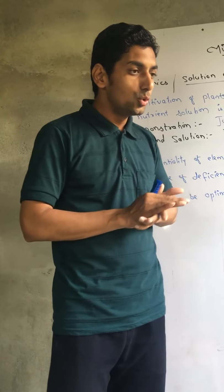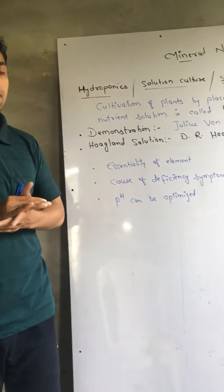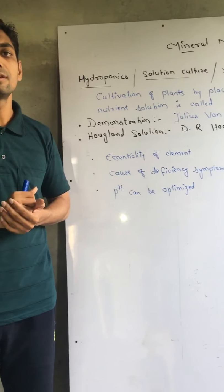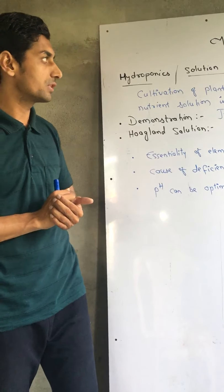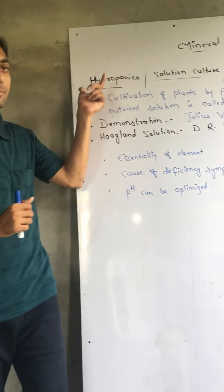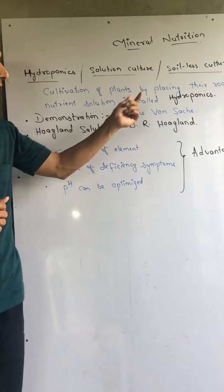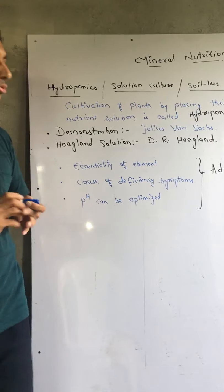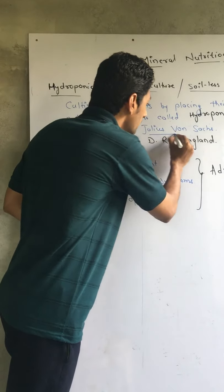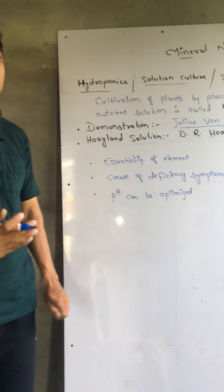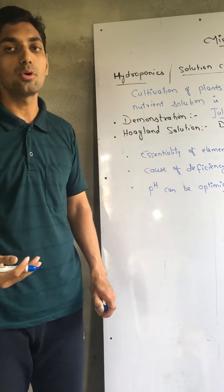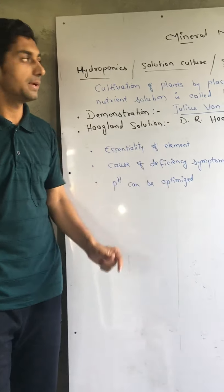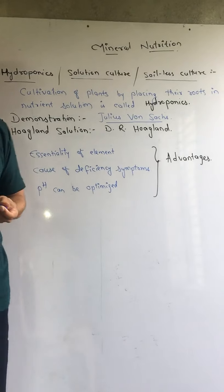First of all, Julius Von Sachs was the person who worked on nitrogen-related deficiency and demonstrated the use of the hydroponics method. The demonstration was first given by Julius Von Sachs. He mainly worked on nitrogen deficiency and firstly demonstrated the essentiality of nitrogen for plants using the hydroponics soil-less culture technique.